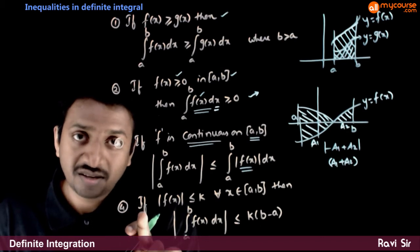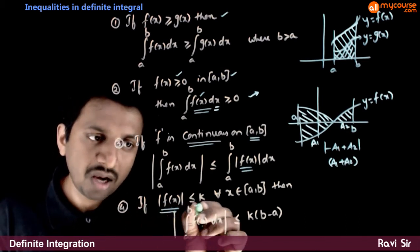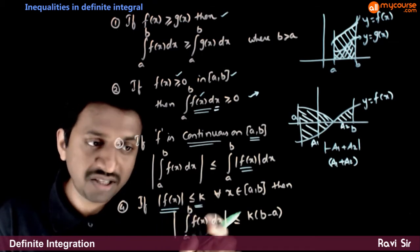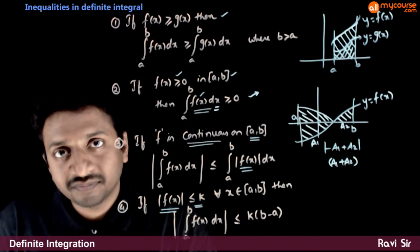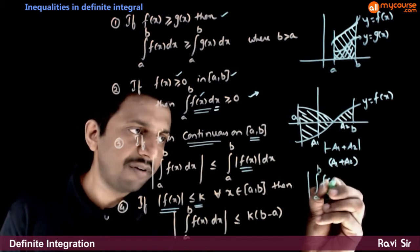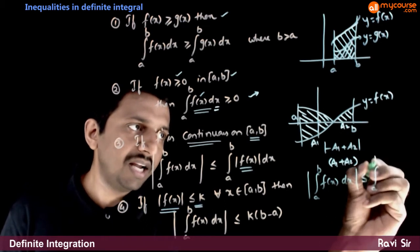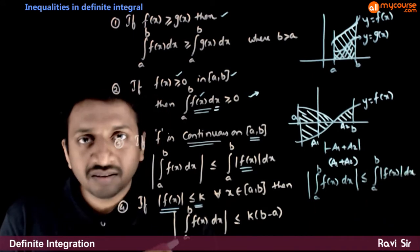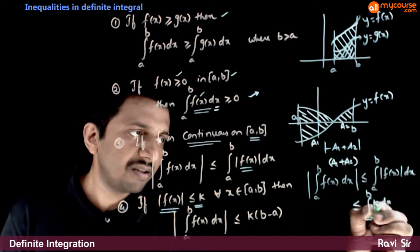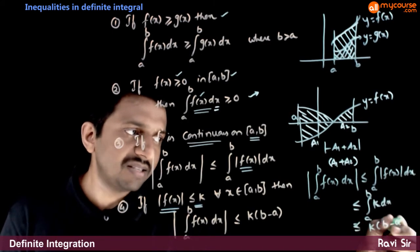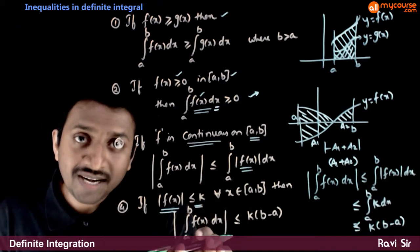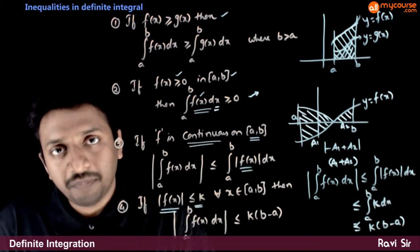Next inequality: if mod f(x) is always less than or equal to k — that is, if f(x) always lies between minus k and plus k — then the integration of mod f(x) from a to b will always be less than k times (b minus a). This follows because mod of integration from a to b of f(x)dx is always less than the integration from a to b of mod f(x)dx, and since mod f(x) is always less than or equal to k, this is always less than the integration of k dx from a to b, which equals k times (b minus a).